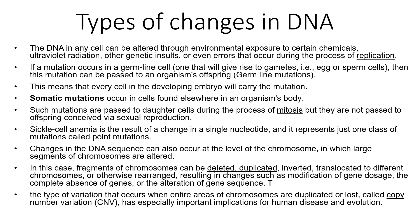Changes in DNA sequence can also occur at the level of the chromosome, in which large segments of chromosomes are altered. This means deletion, duplication, inversion, or translocation can occur, affecting chromosome fragments that can be rearranged, leading to modification of gene dosage, the complete absence of a gene, or alteration of gene sequence. When entire areas of chromosomes are duplicated or lost, this is known as copy number variation, which has very important implications for human disease and evolution.